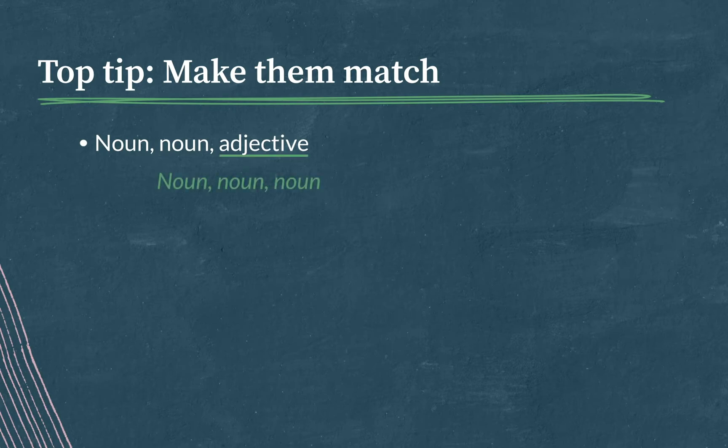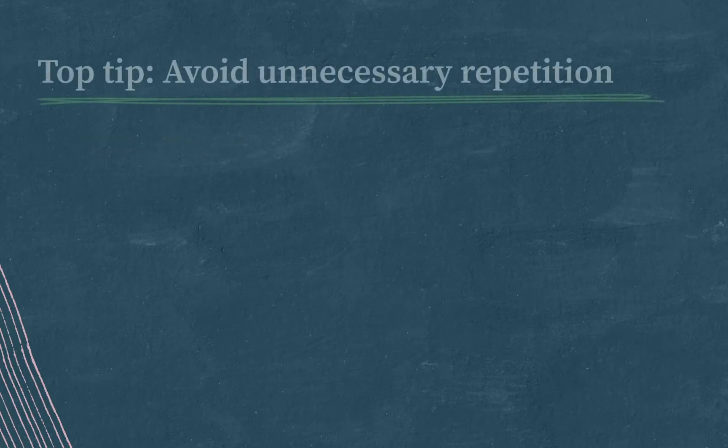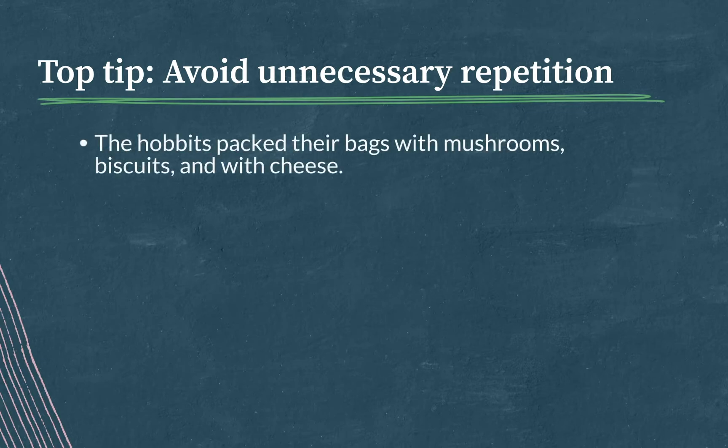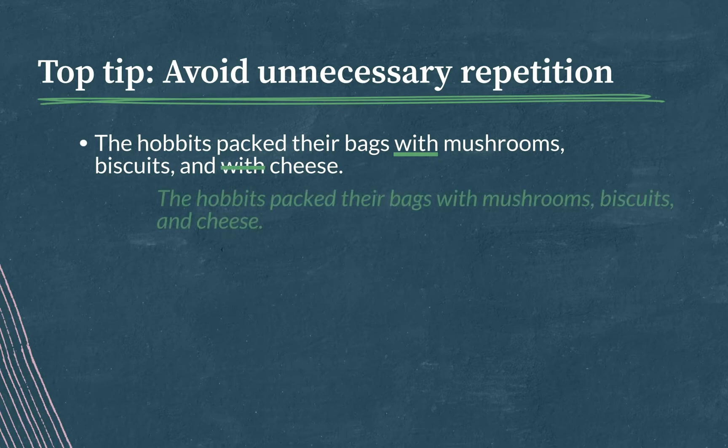The next top tip, avoid unnecessary repetition. One way parallel structure errors crop up is when sentence elements come up twice, unnecessarily. So if we look at the hobbits packed their bags with mushrooms, biscuits, and with cheese, we can see how with introduces the whole list and it applies to all three items, mushrooms, biscuits, and cheese. And that means that the with right before cheese is redundant and it can be removed, leaving us with, the hobbits pack their bags with mushrooms, biscuits, and cheese.